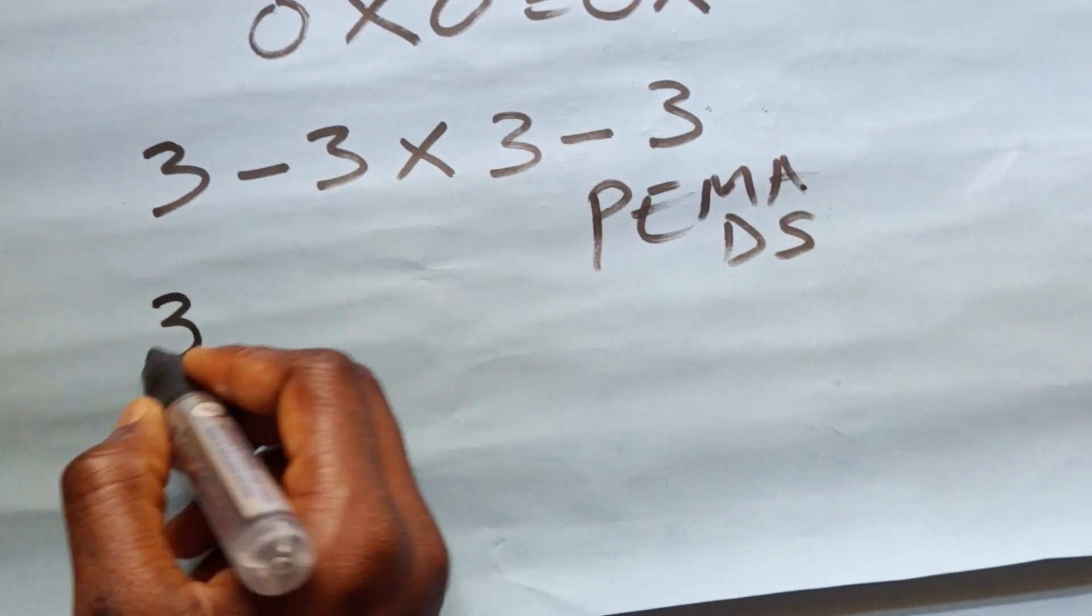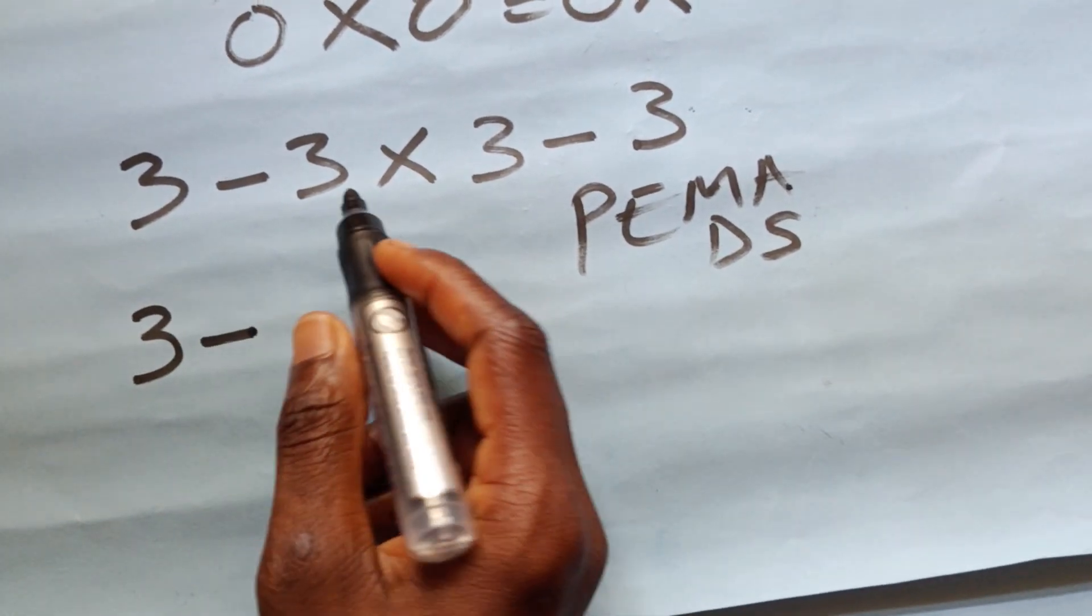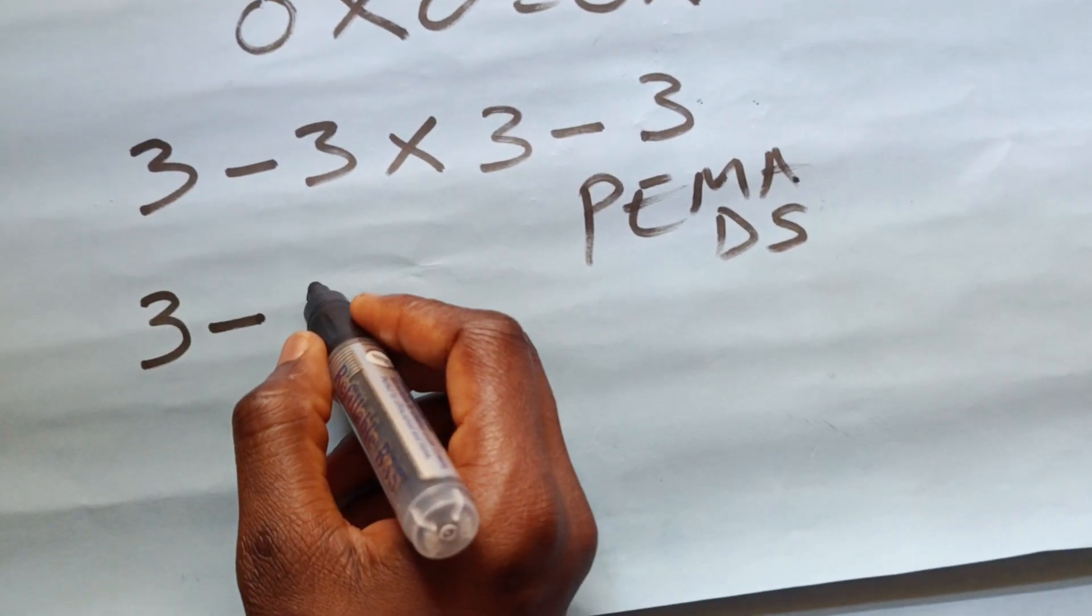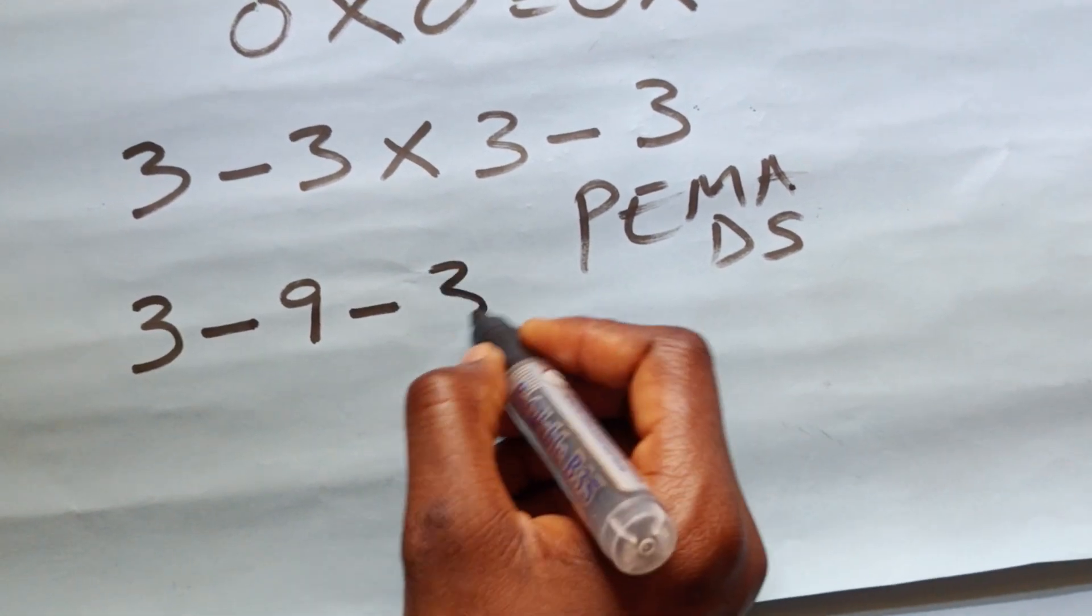So we are going to have 3 minus 3 times 3, which is 9, minus 9, then minus 3.